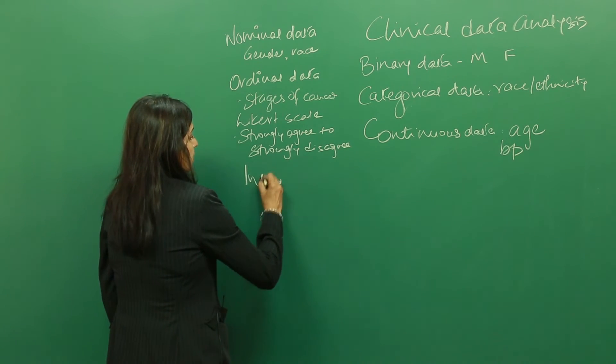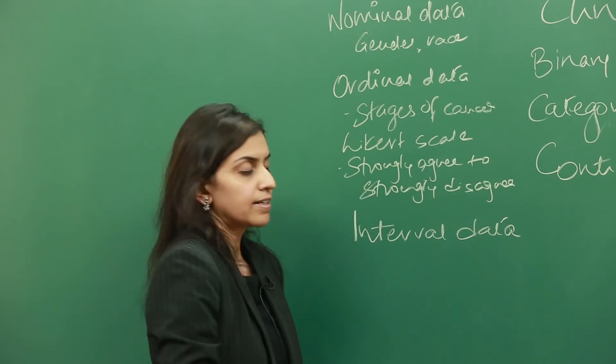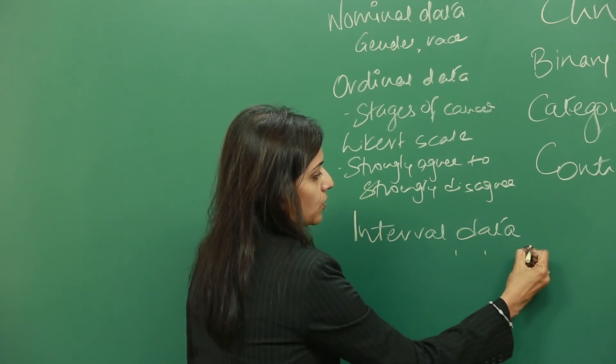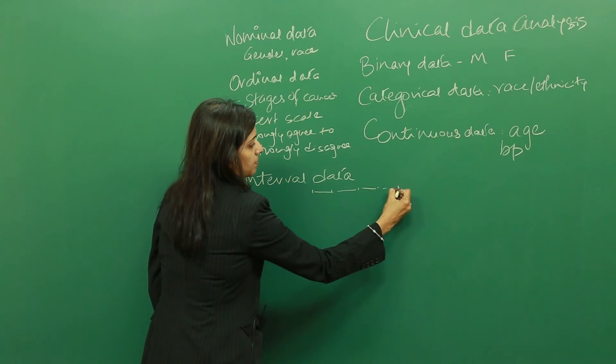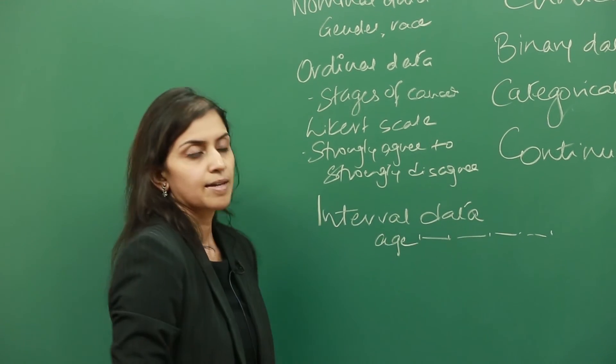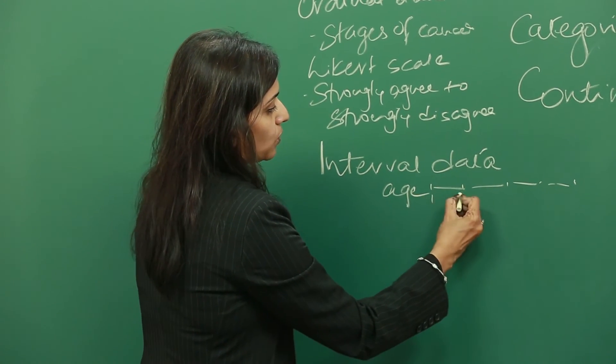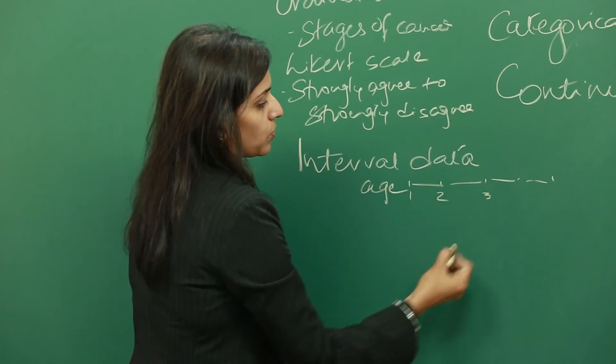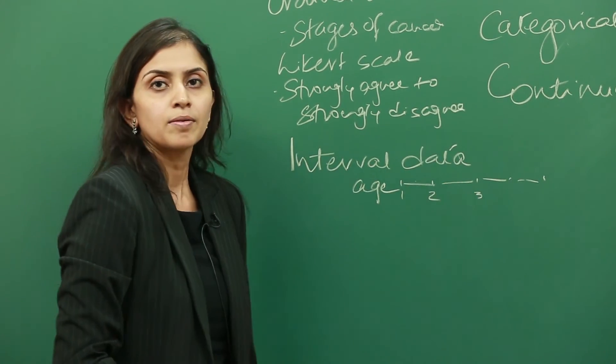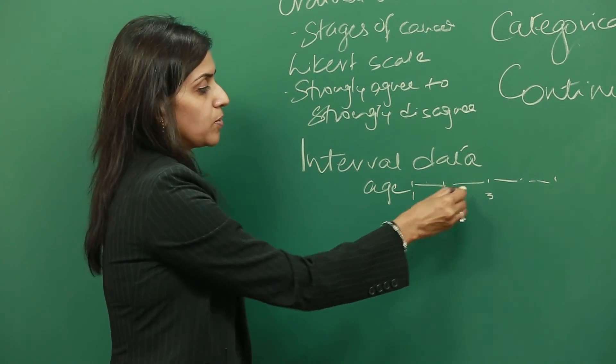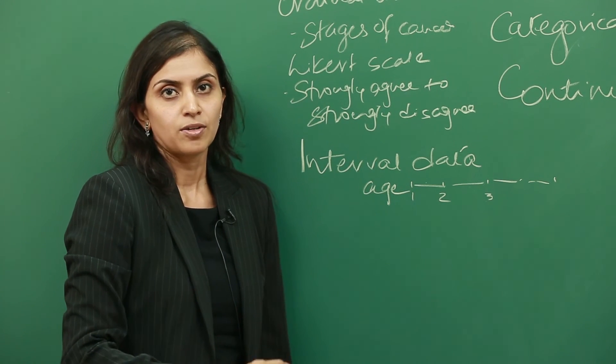Then we have interval data. In interval data, the data is spaced out by intervals, and each of these intervals is exactly the same. Age is an example of interval data. The age difference between one and two years is exactly the same as between two and three years. The intervals in between these variables are meaningful and they're about the same.